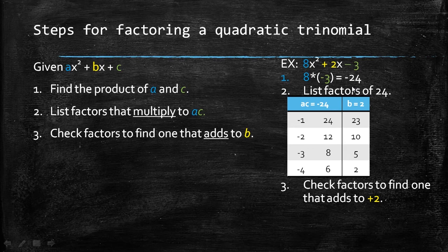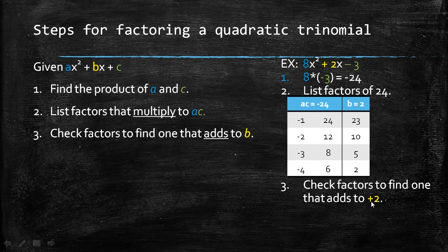So I know in order to get a negative product, one of my numbers has to be positive, one of my numbers has to be negative. In addition to this, I need the sum to add up to a positive 2. Well, in order for this to add up to a positive 2, the larger of the two numbers has to be positive.